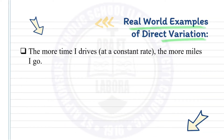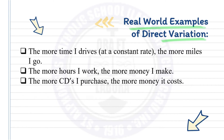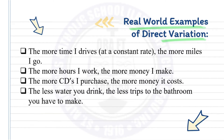Here are some real-world examples of direct variation: the more time I drive at a constant rate, the more miles I go; the more hours I work, the more money I make; the more CDs I purchase, the more money it costs; and the less water you drink, the fewer trips to the bathroom you have to make.